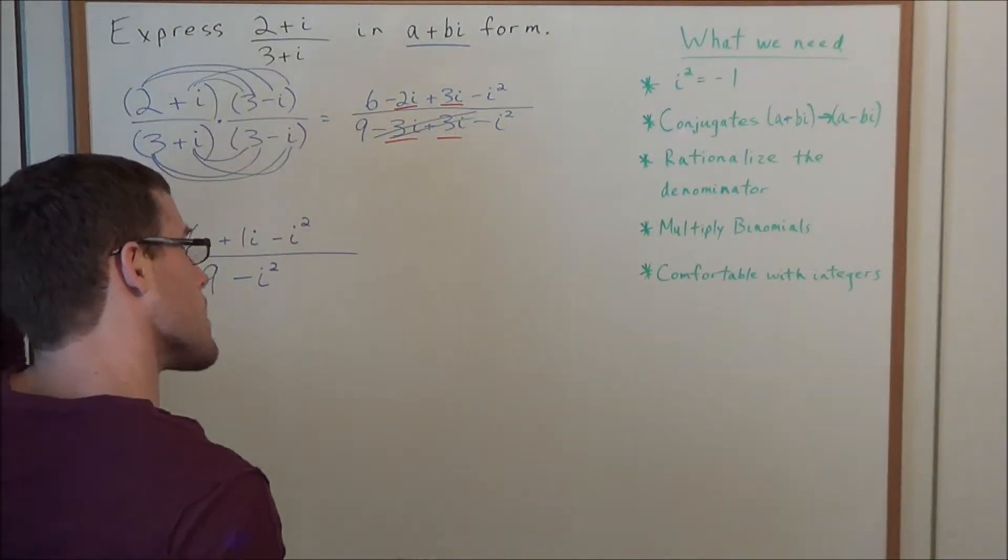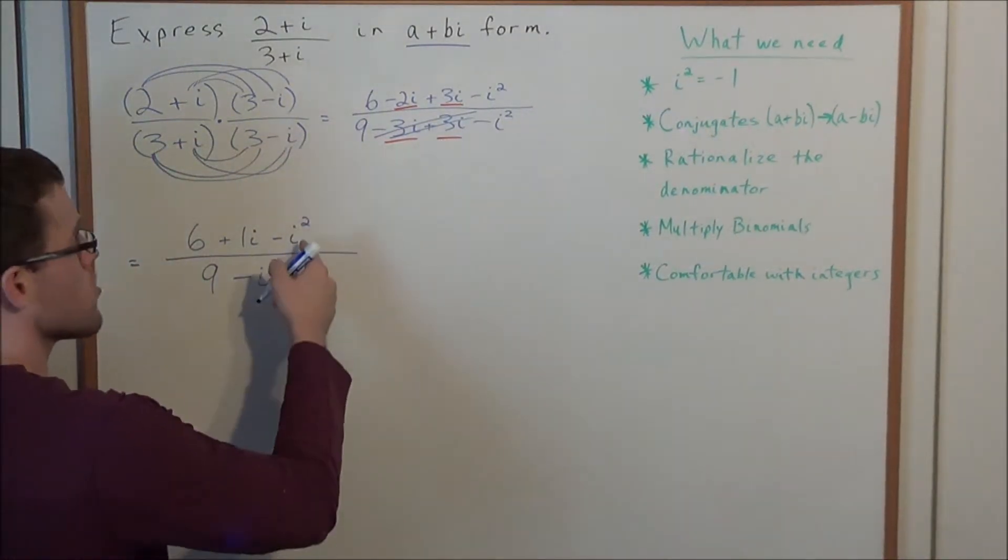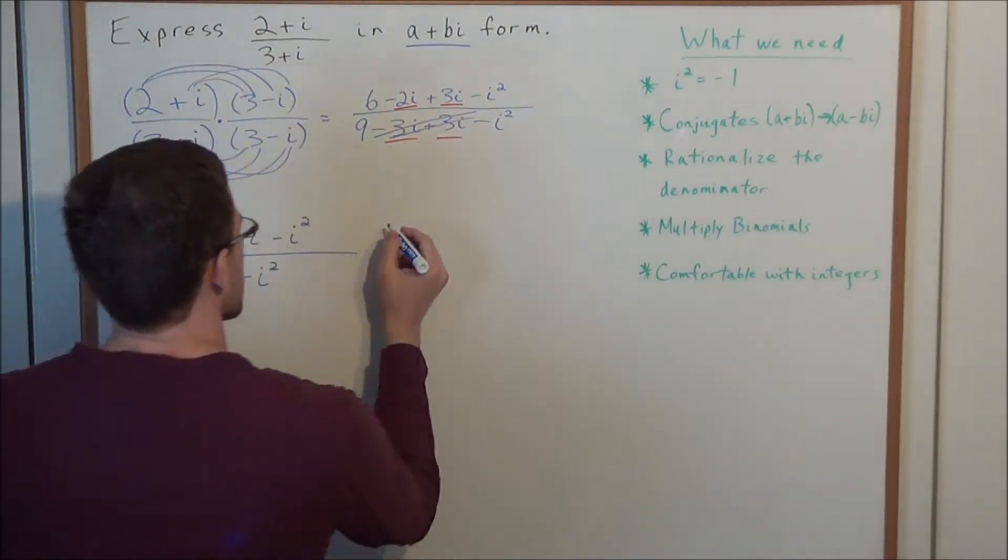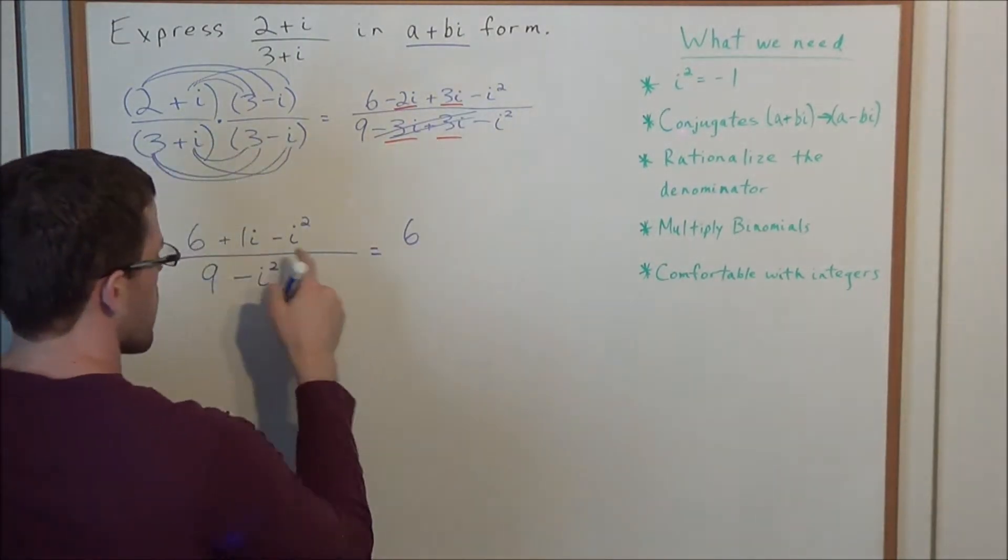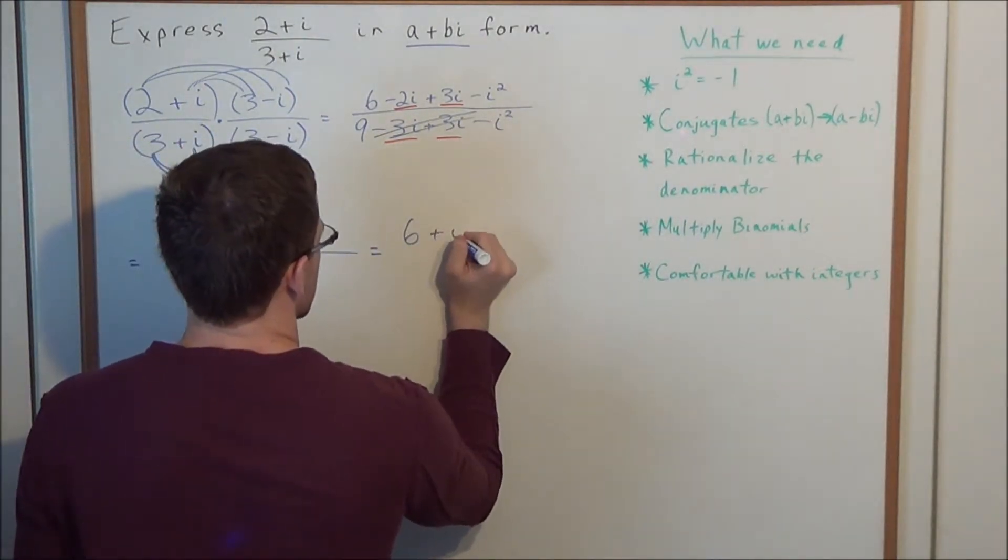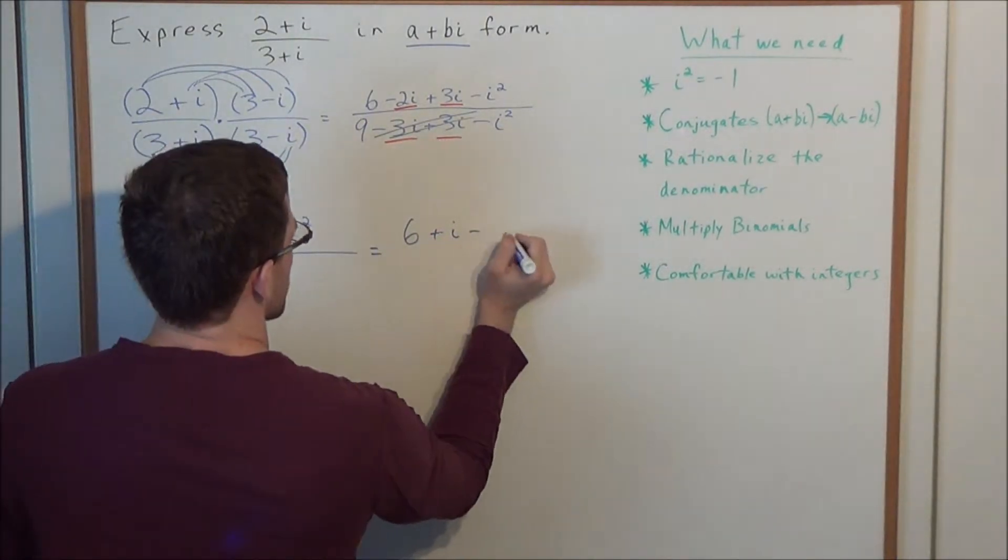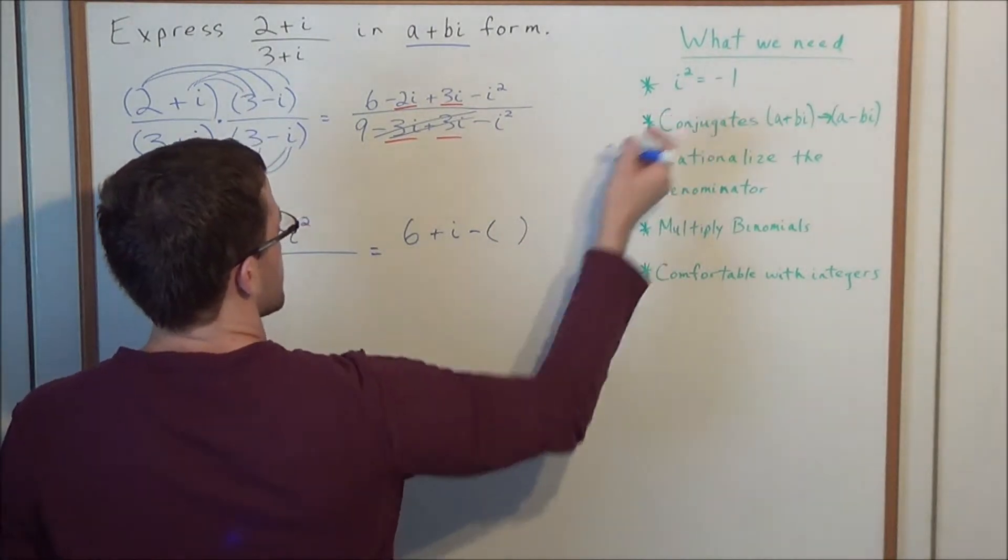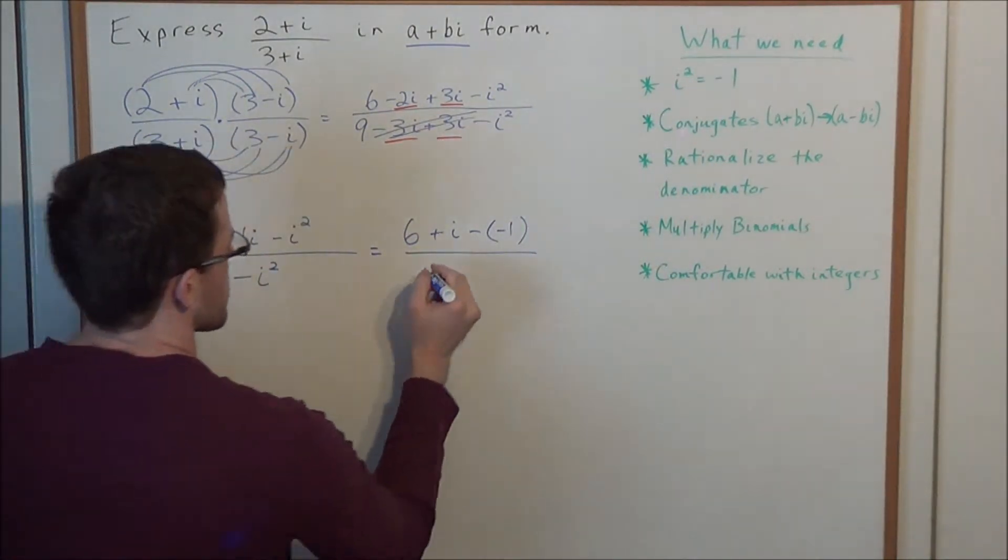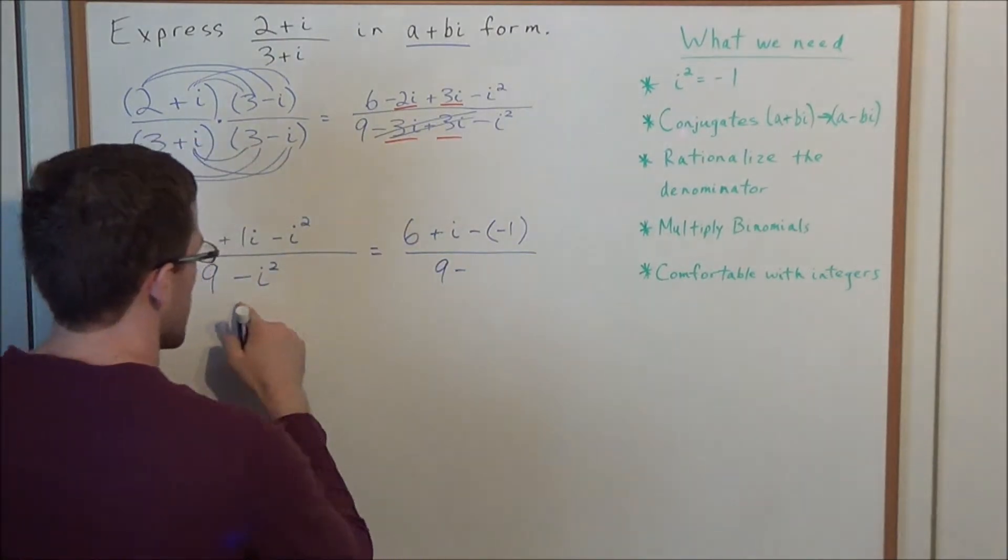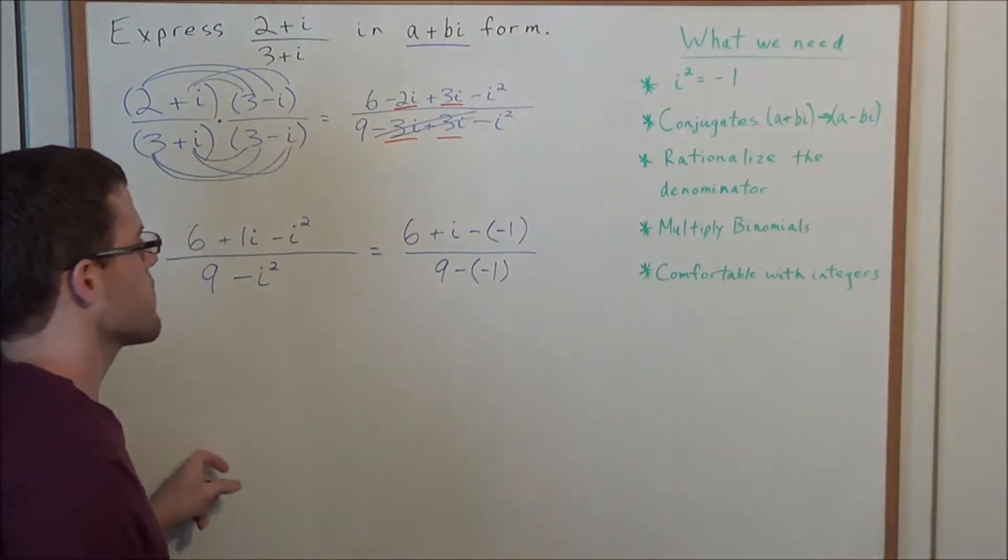So for the next step now, what we need to do is we need to consider the fact that i squared equals negative 1. So this allows us to substitute. So we have 6, and now instead of 1i, I'll go ahead and just write 6 plus i. And now minus i squared. So minus, instead of i squared, we'll substitute minus 1. And now in the denominator, we have 9 minus i squared. But once again, instead of i squared, we'll substitute for minus 1.